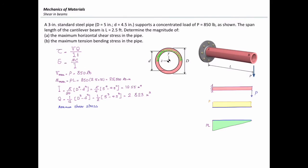Now I am ready to calculate the maximum shear stress by applying the values into the shear stress equation. The maximum shear force is 850 pounds, Q is 2.823 in³, and I is 10.55 in⁴. What remains is determining the thickness t.